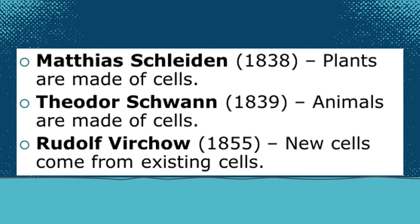In 1838, Matthew Schleiden proposed that plants are made up of cells. In 1839, Theodor Schwann also proposed that animals are made of cells. In 1855, the third doctrine of Schwann and Schleiden — spontaneous generation, meaning that cells formed by free cell formation — was proven wrong by Rudolf Virchow. That year, he formally enunciated his powerful dictum 'omnis cellula e cellula,' meaning all cells only arise from pre-existing cells.